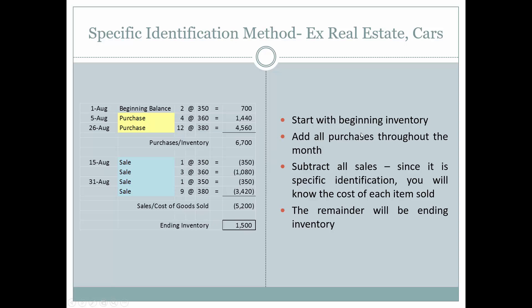We start with beginning inventory, add all purchases throughout the month, and subtract all sales. Since it's specific identification, we know the cost of each item sold, and the remainder is ending inventory. This makes it straightforward to determine what was sold and how much it originally cost.